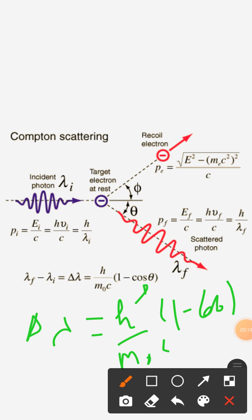Here h equal to Planck constant, m0 is the rest mass of electron which is equal to 9.1 times 10 to the power minus 31 kg, and c equal to speed of light. By putting this value we can see how much will be the change in the wavelength of photons.